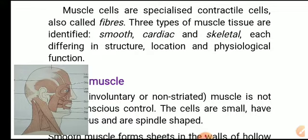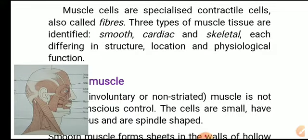The first type is smooth muscles. Smooth muscles are found in the digestive system and hollow organs.